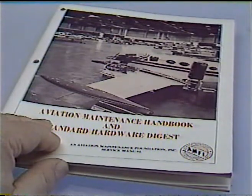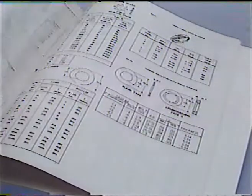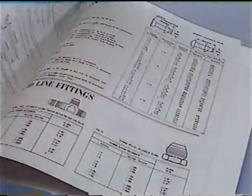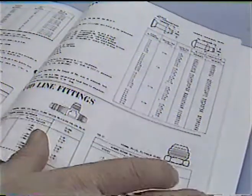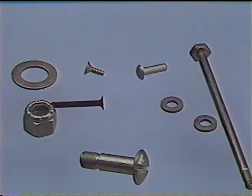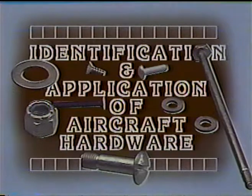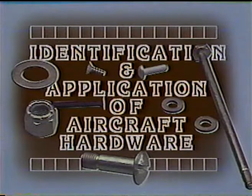During your training as an aviation maintenance technician, you'll be confronted with a vast array of part numbers and letters which, at first, will seem confusing. As you progress in your career, however, many of these number and letter combinations will become as familiar to you as your phone number. In this program, you will become acquainted with some of the most common pieces of aircraft hardware, identifying a few in detail by part number and introducing others by application and design.